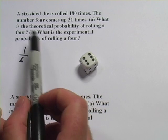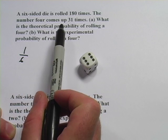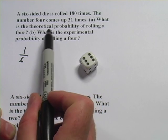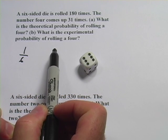Let's look at this problem here. It says a six-sided die is rolled 180 times. The number four comes up 31 times. What is the theoretical probability of rolling a four, and what is the experimental probability of rolling a four?